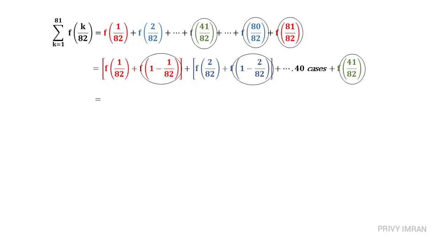Hence all these values are 1 + 1 + 1... 40 times. And now let me calculate f(41/82).